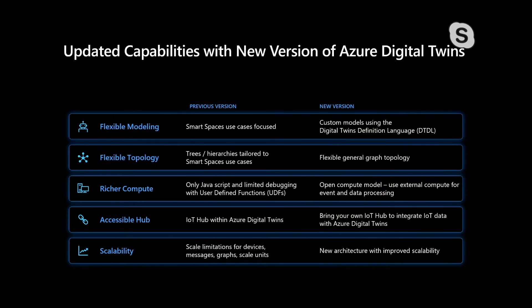Last but not least — scalability. We made some good progress with the current version, but as use cases expanded for a lot of our customers, the scale targets became much greater than what the current preview provided. So we've spent quite a bit of time on a new and improved architecture, and we'll be sharing the scale targets with the public preview. It is much better and higher scale than the previous version, and we're really excited because a lot of our customers are trying to go to production with Azure Digital Twins.